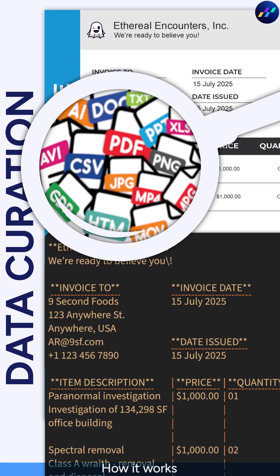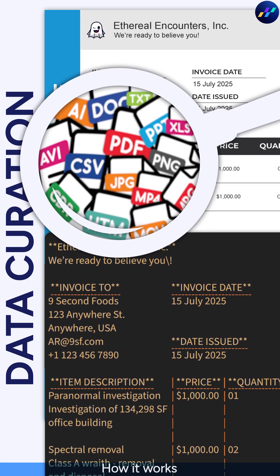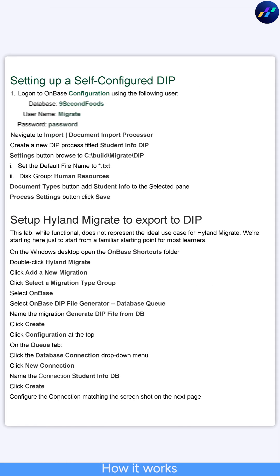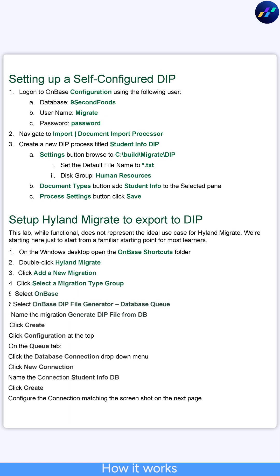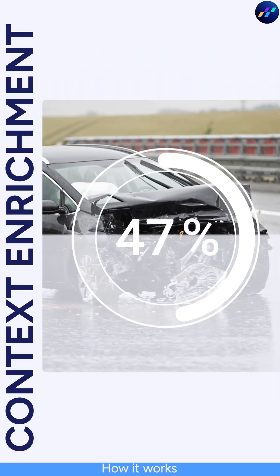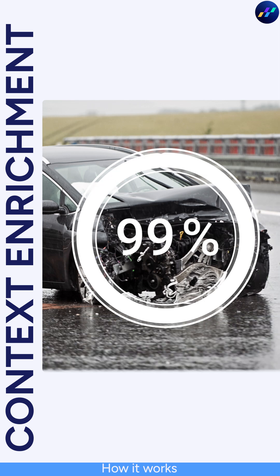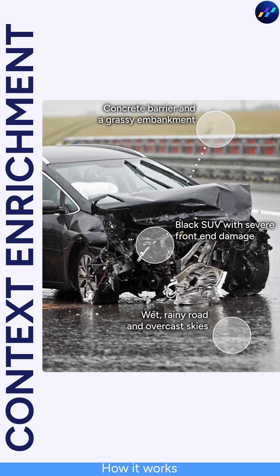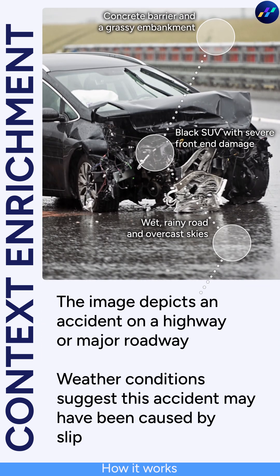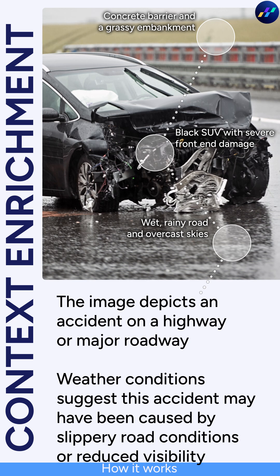which is critical for preserving the author's intent — the inherent meaning found in design and composition. The second work stream, Context Enrichment, parses entire documents, uncovers relationships between data points, and infers metadata that tells the whole story.